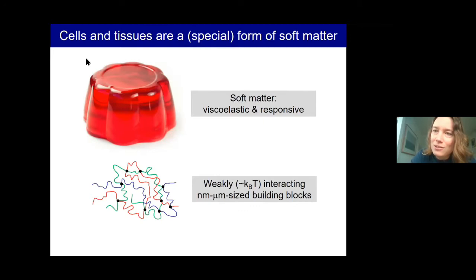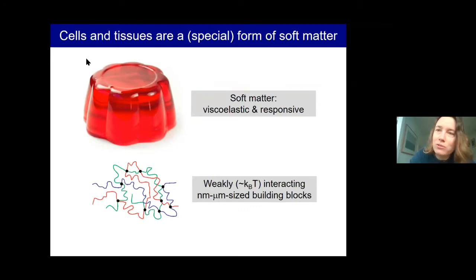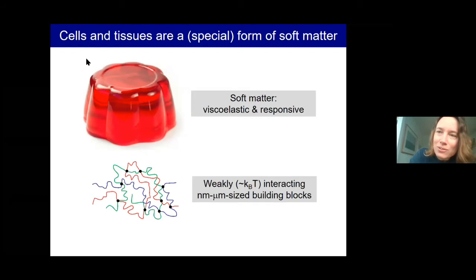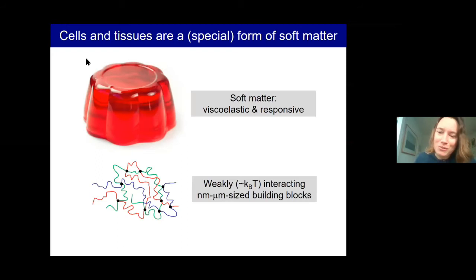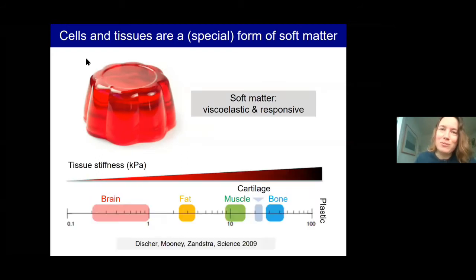Soft matter is the type of material that is all around us — an example is pudding. Soft matter is characterized by its mechanical properties being viscoelastic and very responsive to external cues such as mechanical deformations. The basis for this is that soft matter consists of weakly interacting building blocks such as polymers and colloids, with sizes in the range of nanometers to micrometers, such that the building blocks are subject to thermal fluctuations.